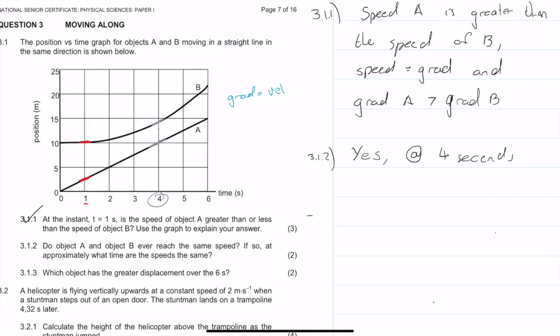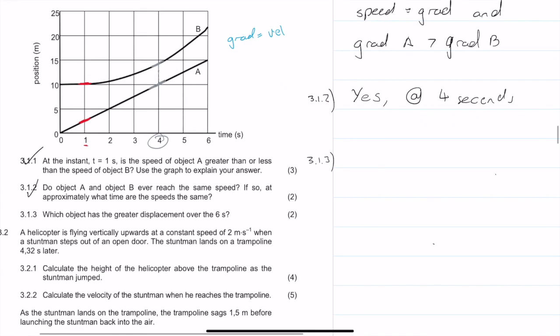Question 3.1.3 says which object has the greater displacement over the 6 seconds? Here the important thing to note is that our displacement is equal to our change in position. For each of these objects, A and B, we need to calculate the change in position. So the change in position of A is going to be equal to 15 minus 0, which is 15 meters.